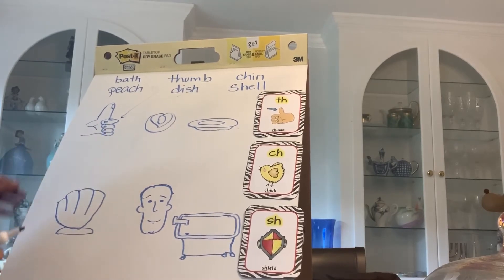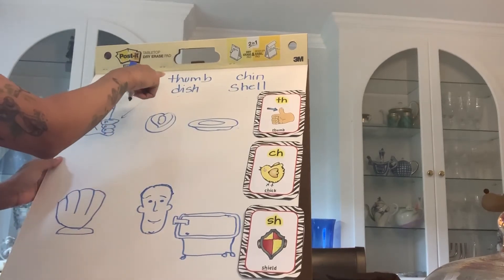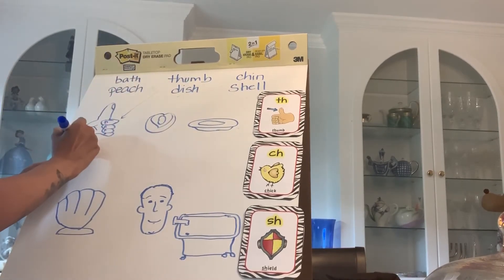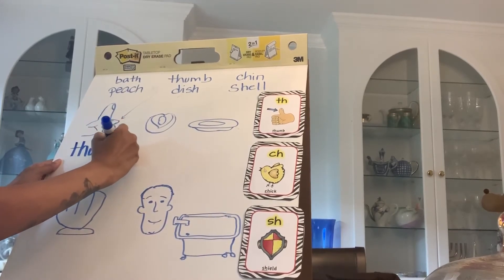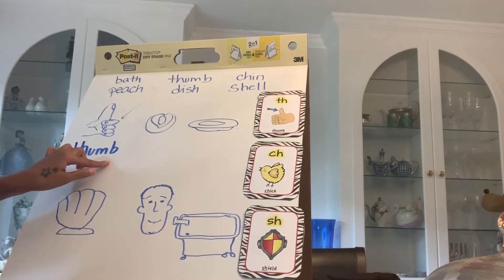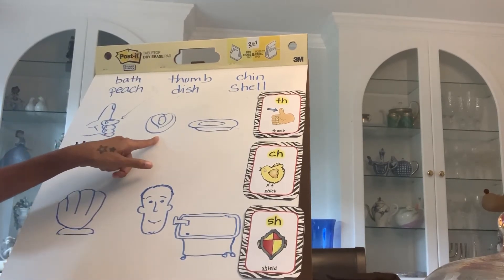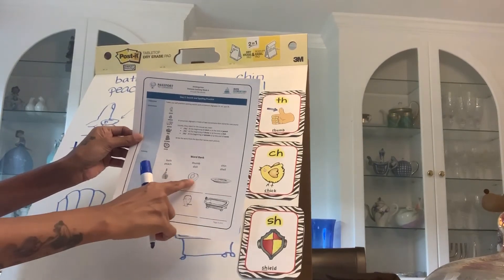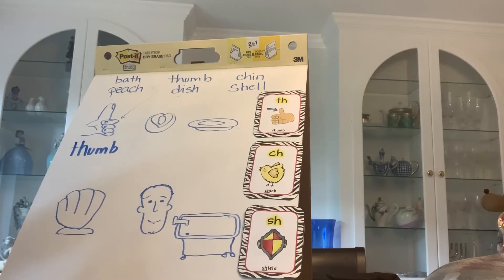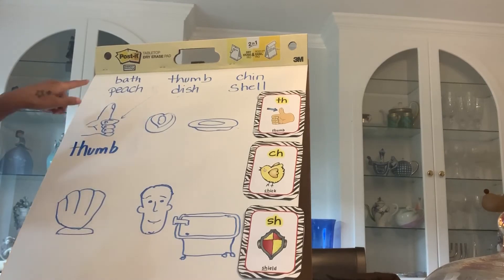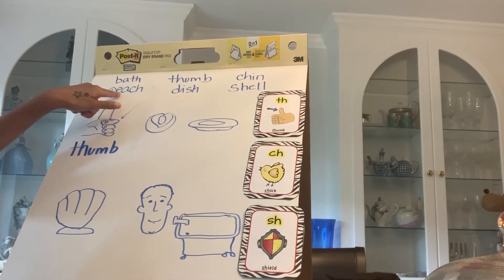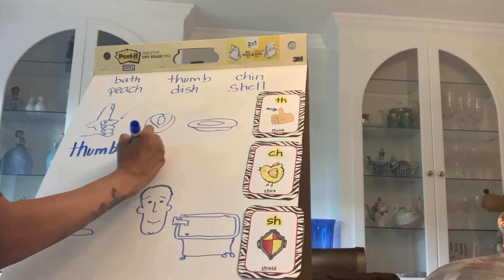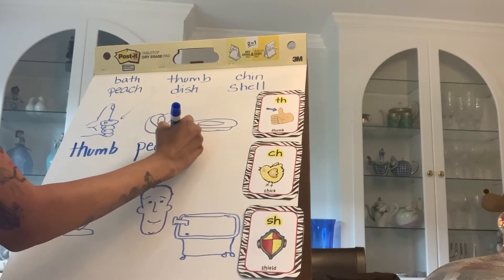Our first picture here is a thumb. We're going to write thumb right here. The next picture — my picture is not as good, but the next picture you had on your paper is a peach. So which word starts with the P sound? If we look for a P sound, it would be this word here — peach. So we're going to go ahead and write peach.